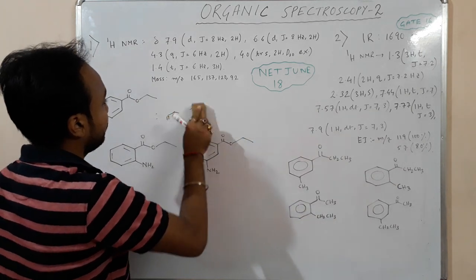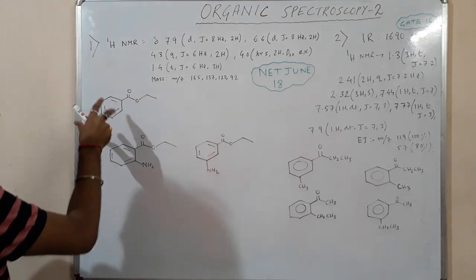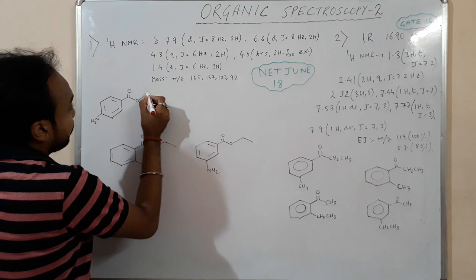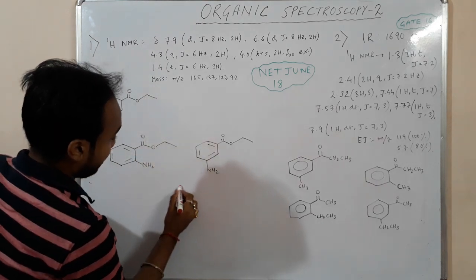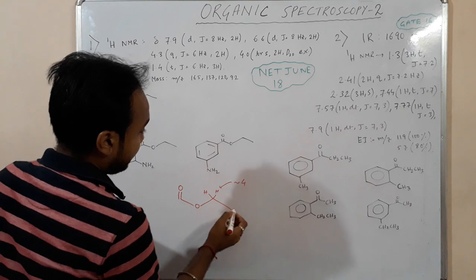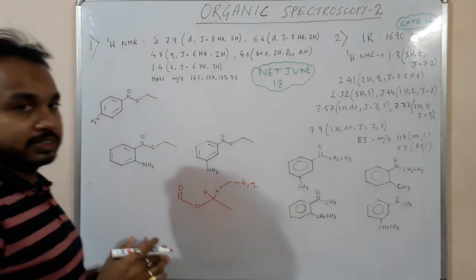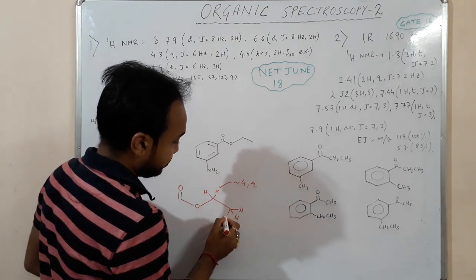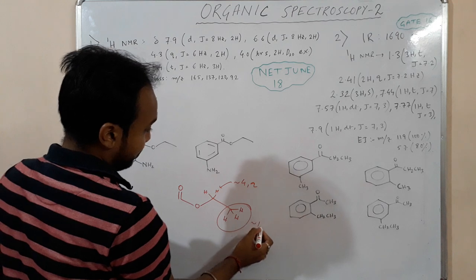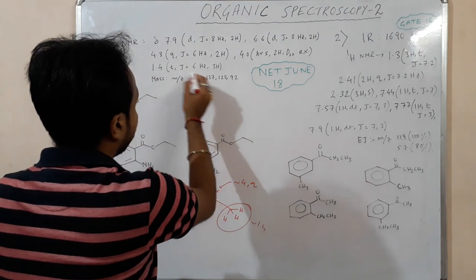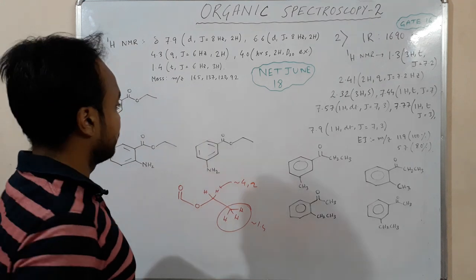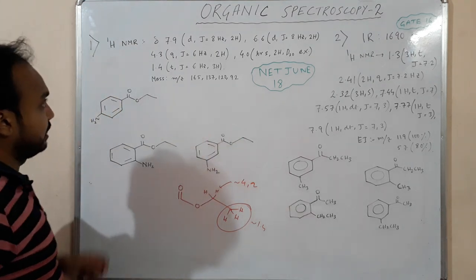Out of these three structures we have to determine the correct position. We have 4.3 quartet, J = 6 Hz, 2 hydrogens. If we have this type of system, the CH2 will come around 4 ppm as a quartet. J value of 6 means vicinal coupling between these protons. For this type of proton we have the value around 1.4 or 1.3 as a triplet, 3 hydrogens, J = 6. These two types of hydrogen undergo vicinal coupling, giving us an ethyl ester structure.